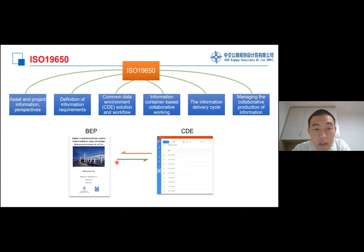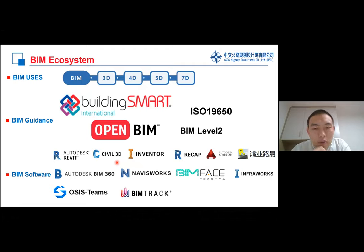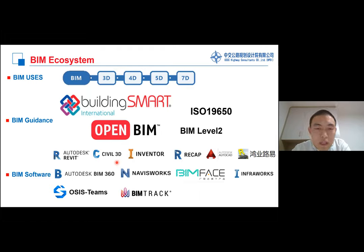We adopted the ISO standard to help us do the management work. The ISO standards can not only be used for BIM projects — they are very general standards that can help a lot. Our BIM ecosystem covers not only design BIM but also construction and maintenance, though today we focus on the design parts. The BIM guidance we followed is Open BIM, BuildingSMART ISO, and the UK BIM Level 2. The BIM software used are mainly Autodesk solutions, some local Chinese softwares, and our own in-house developed softwares.